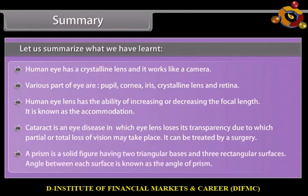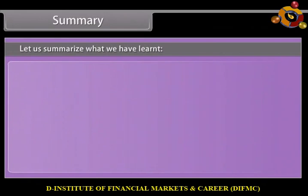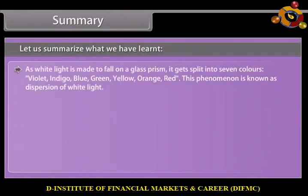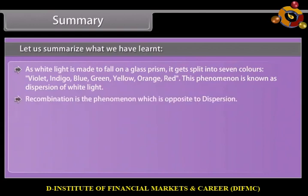A prism is a solid figure having two triangular bases and three rectangular surfaces. The angle between each surface is known as the angle of prism. As white light is made to fall on a glass prism, it gets split into seven colors: violet, indigo, blue, green, yellow, orange, red. This phenomenon is known as dispersion of white light. Recombination is the phenomenon which is opposite to dispersion.